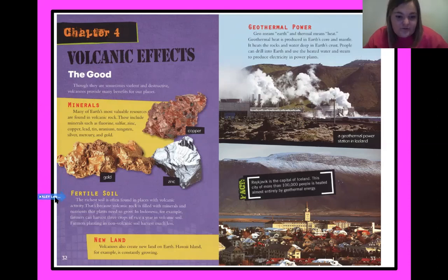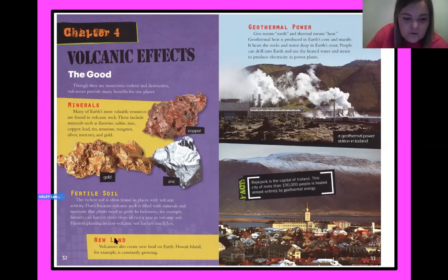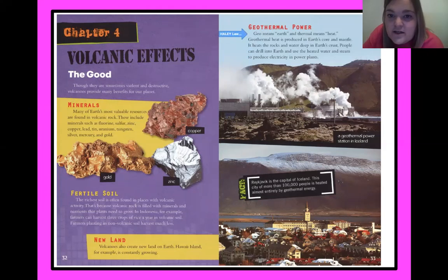There are pictures here of copper, zinc, and gold. Fertile soil: the richest soil is often found in places with volcanic activity, because volcanic rock is filled with minerals and nutrients that plants need to grow. In Indonesia, for example, farmers can harvest three crops of rice a year in volcanic soil, while farmers planting in non-volcanic soil harvest much less.